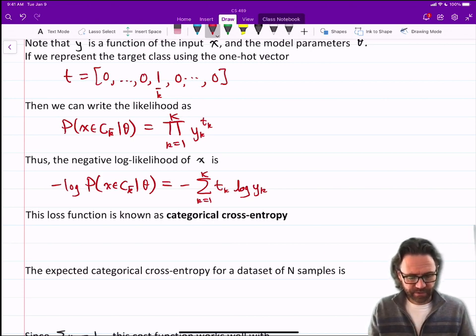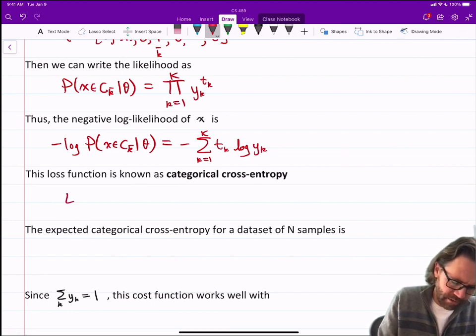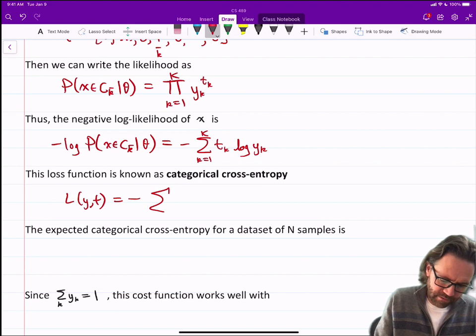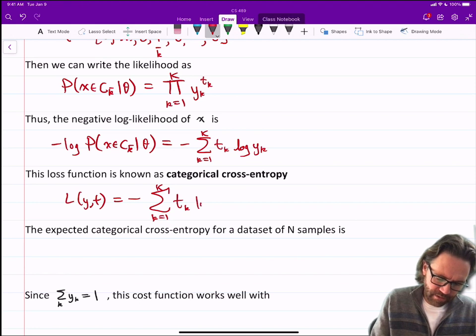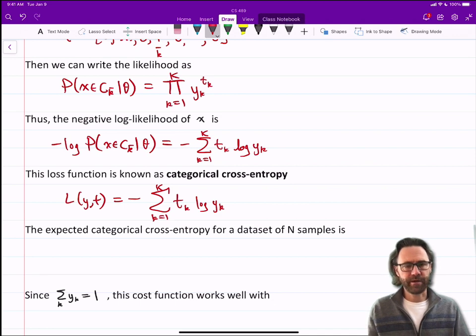This loss function is known as categorical cross-entropy: L of y, t equals negative the sum over the categories of t sub k log y sub k. That log could be natural logarithm, it doesn't really matter.